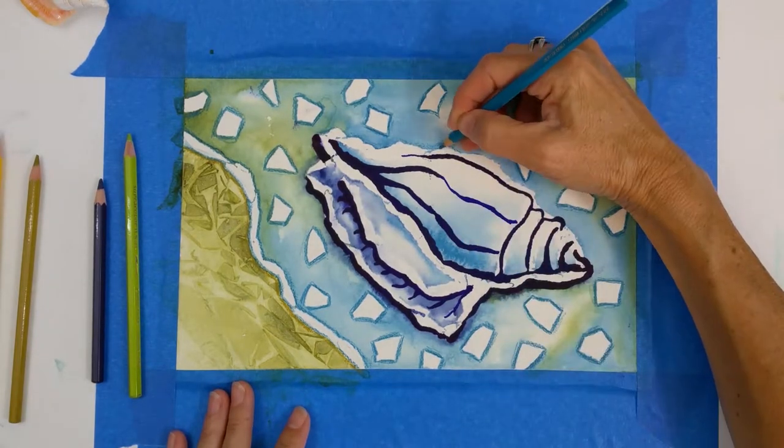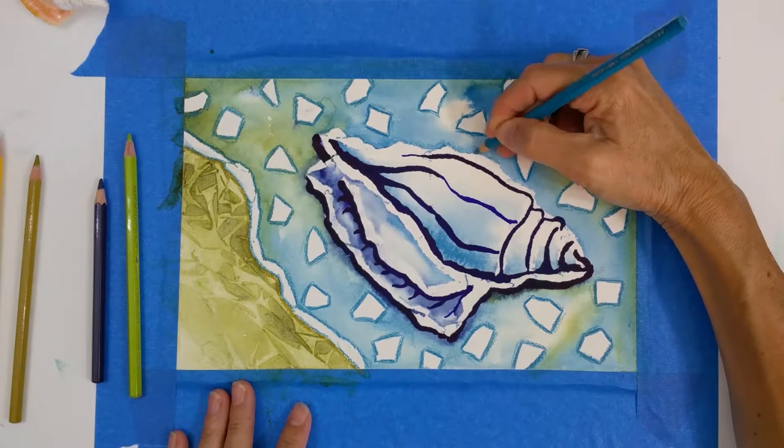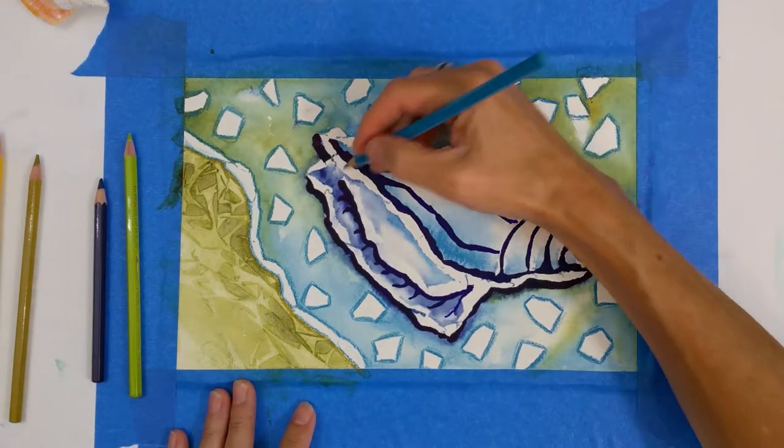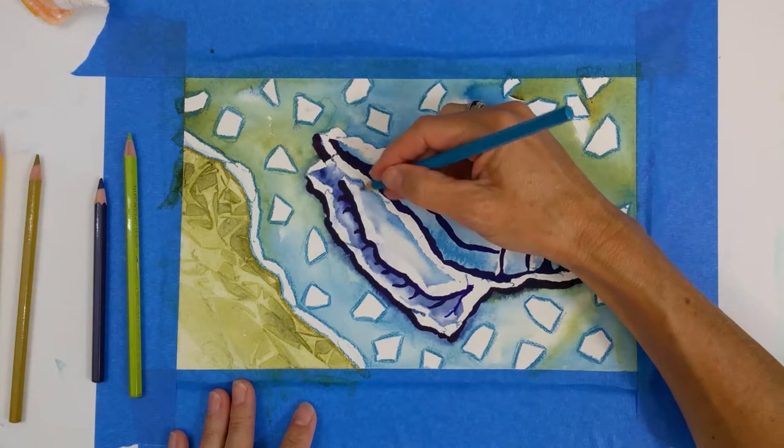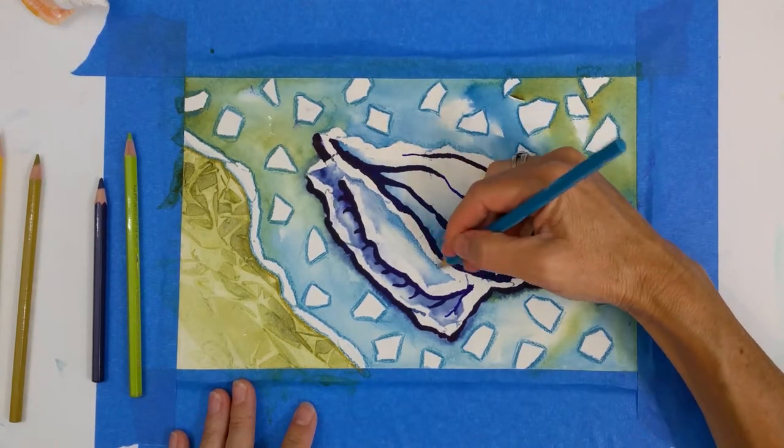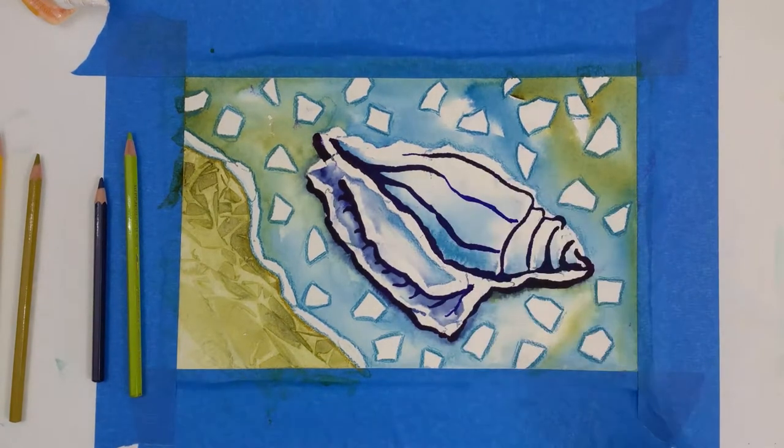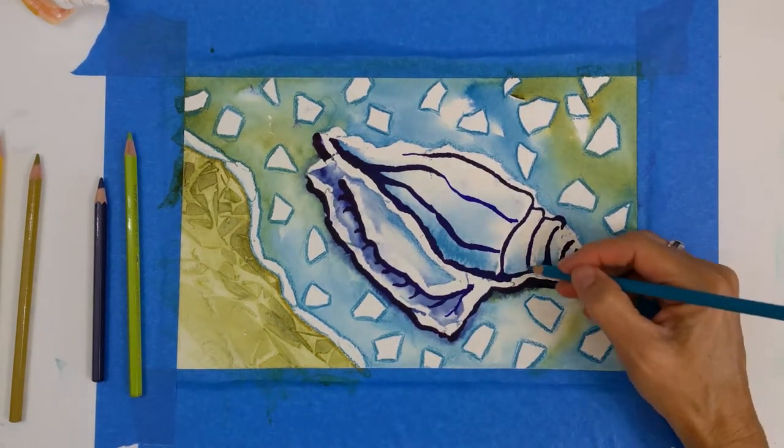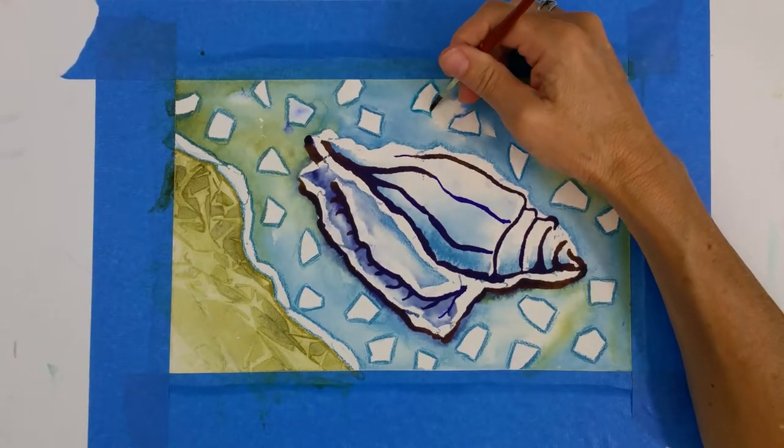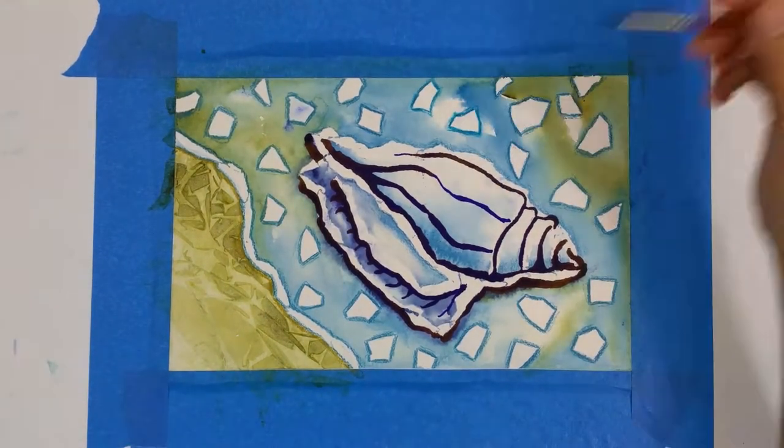Just tidying up the edge of the shell with the pencil. And I'm going to go in later with a little water and soften that so it looks kind of like a hybrid between the pencil and the paint. I love watercolor pencils because they add a lot of texture and the colors are amazing when they dry. They're really true to themselves when they dry.